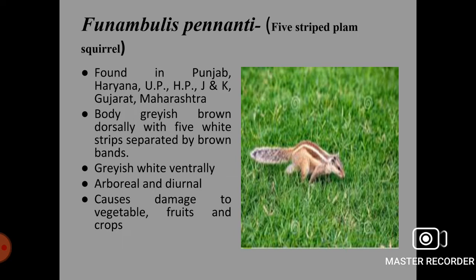The last rodent species is Funambulus pennantii, the five-striped palm squirrel. It is found in states like Punjab, Haryana, UP, Himachal Pradesh, Jammu, Kashmir, Gujarat and Maharashtra. The body is grayish-brown dorsally with five white strips separated by brown bands, and grayish-white on the ventral side. It is an arboreal and diurnal pest that causes damage to vegetables, fruits and crops.